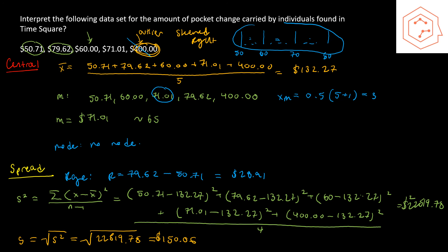As an exercise, verify that the alternate expression for the variance — the sum of all points squared minus n times the mean squared, divided by n − 1 — gives the same answer as the standard formula.